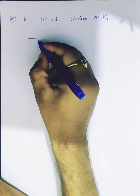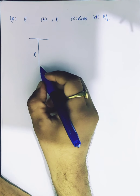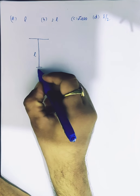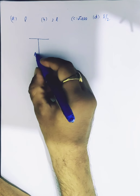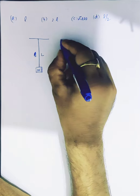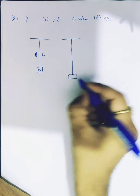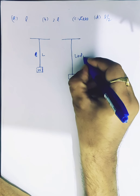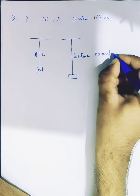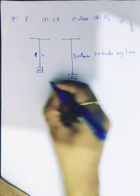The wire has length L and extends by L mm when weight W is attached. So when we put weight W, a wire of length L extends by L mm.